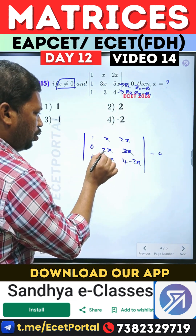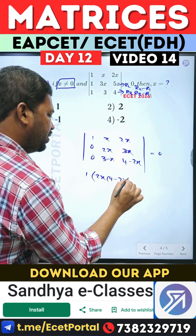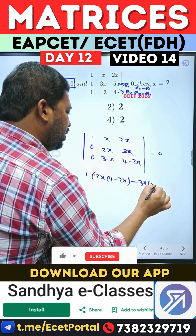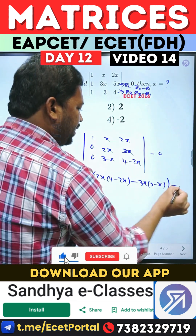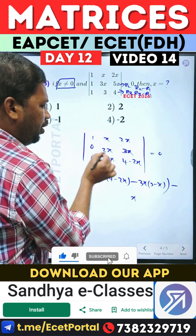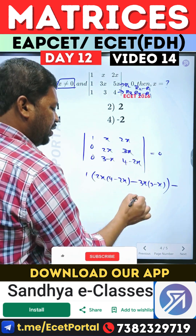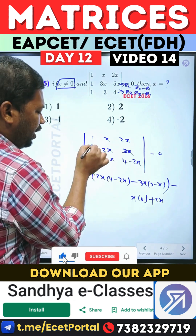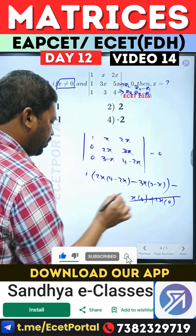1 into 2x into (4-2x) minus 3x into (3-x), okay? Next up, minus x into 0 into (4-2x), 0 into minus 0 into 3x — it is 0. Plus 2x into 0 — the element 0 on the left — directly 0 input, okay? It is 0.